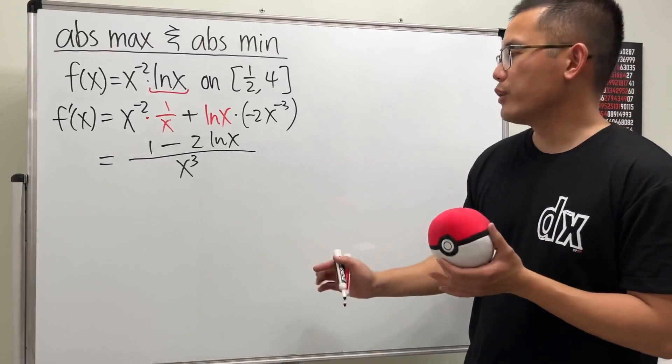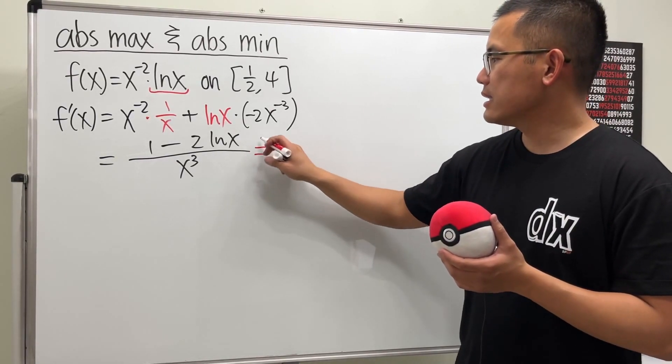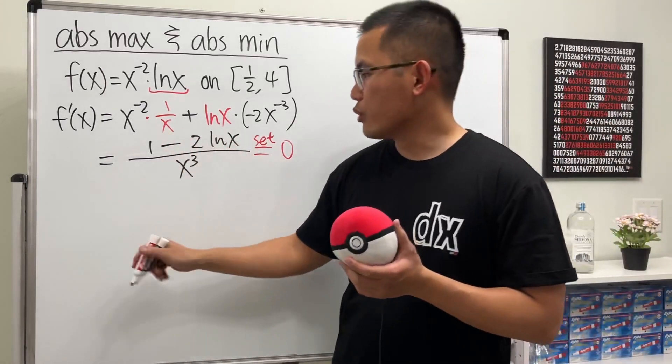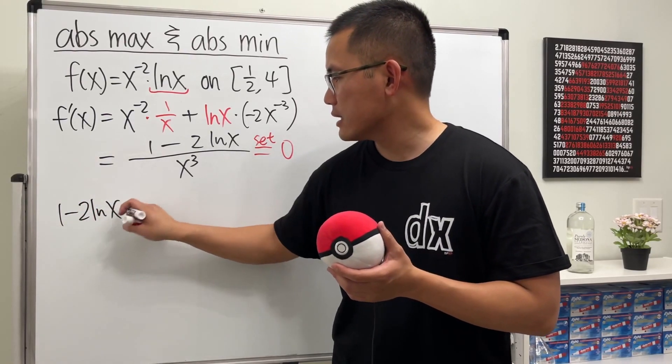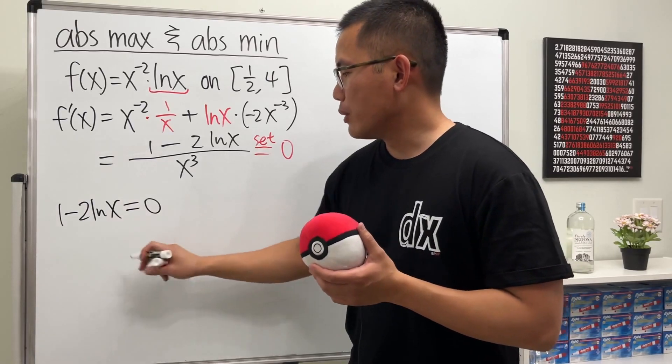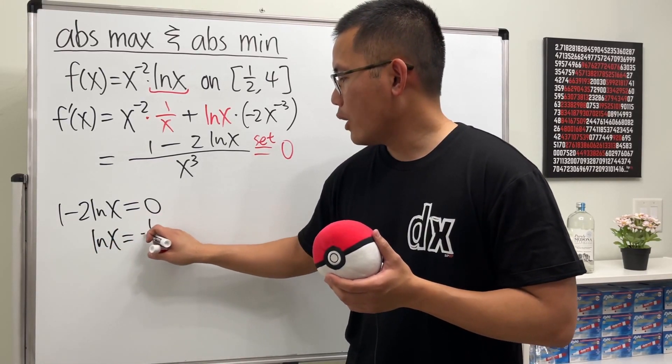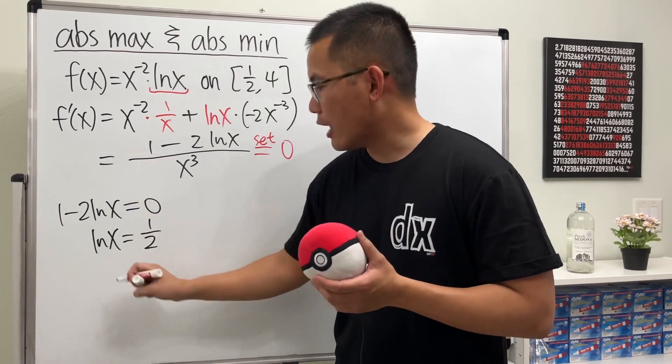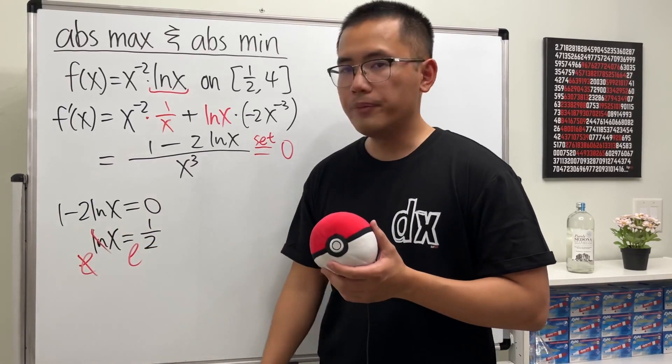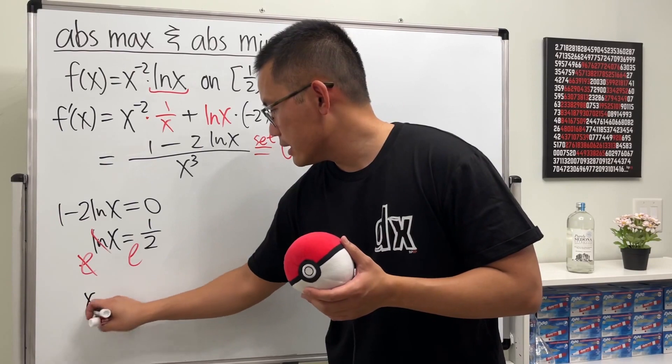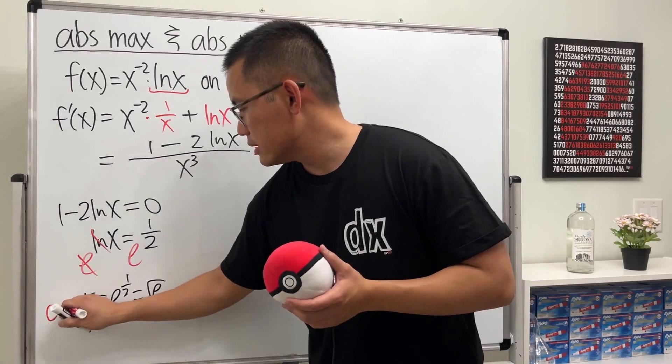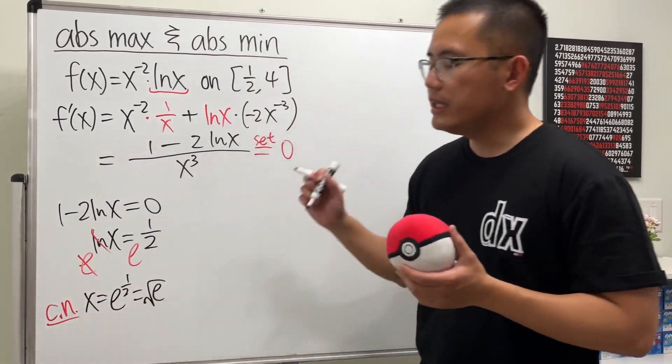Now, we want to get the critical number. And the first case is that we set this to be 0. And to make that happen, we just need to worry about the top: 1 minus 2 ln x to be 0. Bring the 1 to the other side and divide negative 2 on both sides. We get ln x has to be 1 over 2. And then to get the x by itself, to get rid of the ln, we have to do e to the power. Cancel, cancel. So we get x being at e to the 1 half power, and that's the same as square root of e. And this is, in fact, the only critical number.